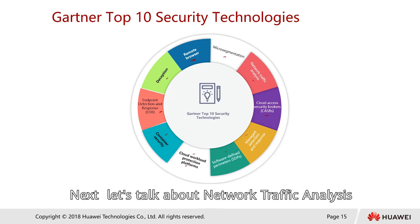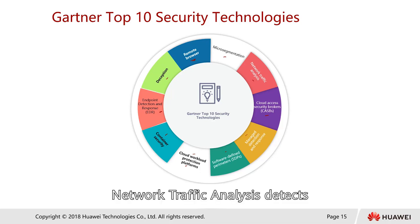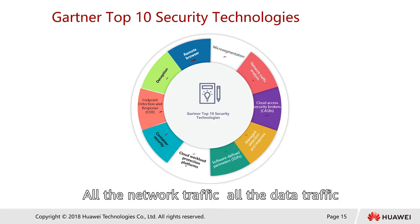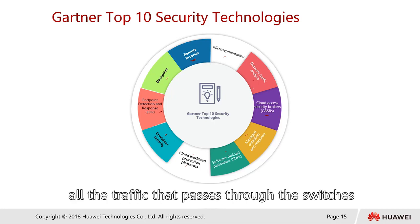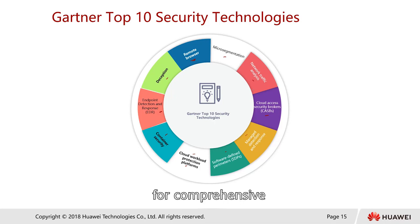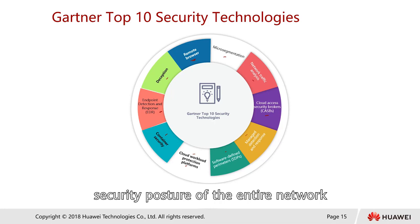Next, let's talk about network traffic analysis. This technology detects abnormal traffic data through all-round enterprise or campus traffic monitoring and big data analysis technology. All network traffic can be analyzed through big data technologies. The technology mirrors all traffic passing through switches, such as the core switch, sending a mirrored copy to an analysis device for comprehensive decoding and statistical analysis. The technology then visualizes and displays the data to allow administrators to intuitively view the security posture of the entire network.